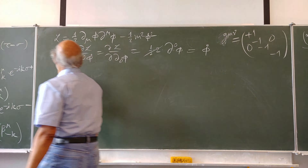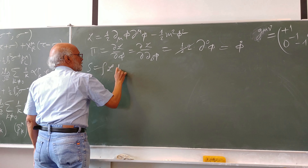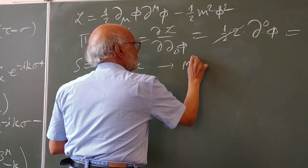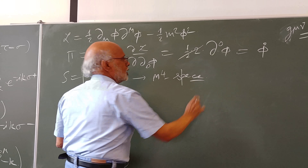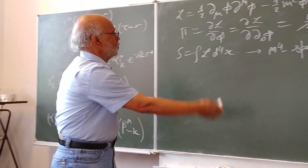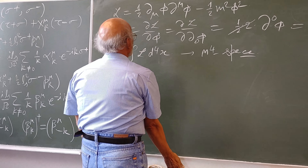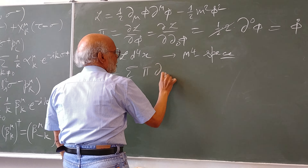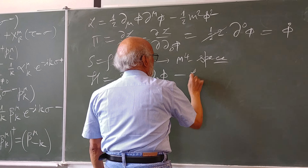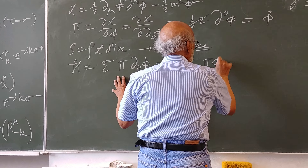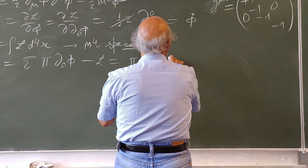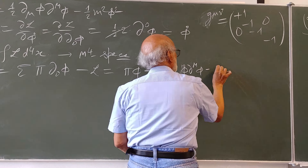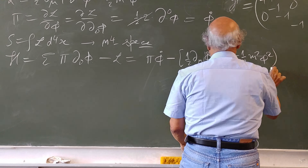We are considering a field theory in four dimensions in flat Minkowski space. You write down the Lagrangian, you obtain the conjugate momentum, and then you can write down the canonical Hamiltonian. This would be pi times phi dot minus L, and since there is only one field phi, you get H in terms of phi dot and phi.